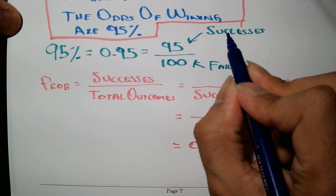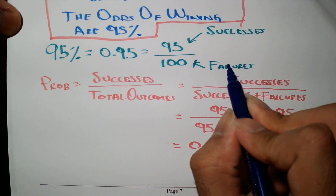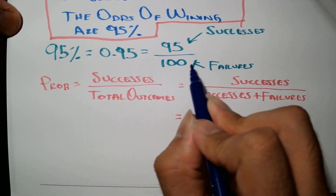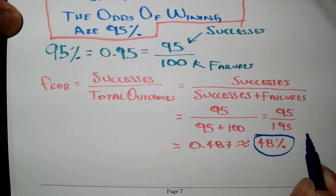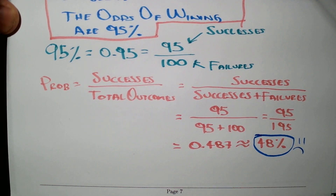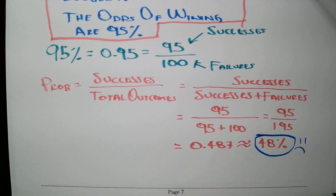So that means you will hit 95 successes per 100 failures. In terms of probability, look how low this is — not even 50% chance, barely 50% if you want to round up.